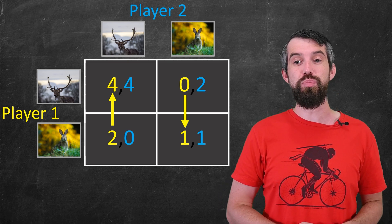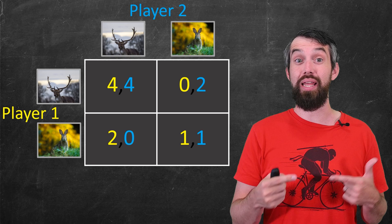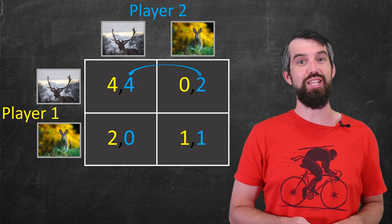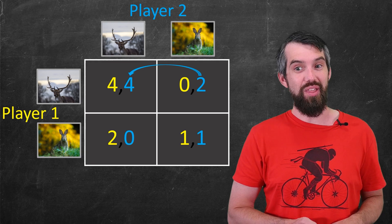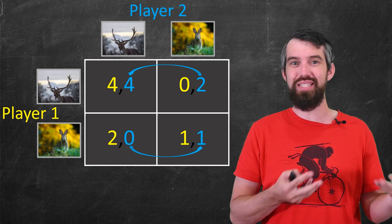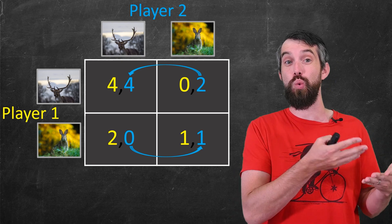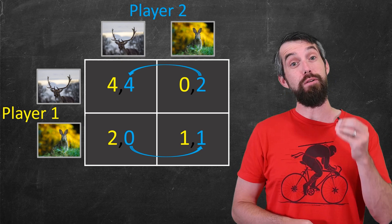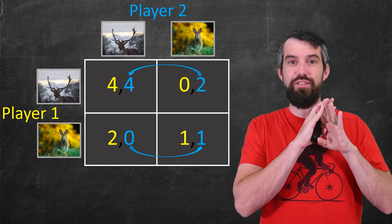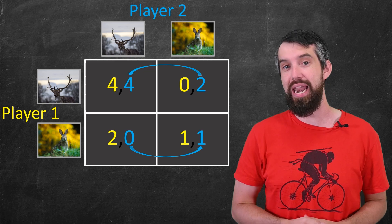Likewise, if you think about it from player 2's perspective. In the case where player 1 plays stag, well player 2 should also play stag. In the case where player 1 plays hare, then player 2 should play hare. Whether player 2 should play stag or hare just depends on what player 1 does. So the point is, there's no dominating strategies and the method we've seen in previous videos just fails. So how can we analyze it?